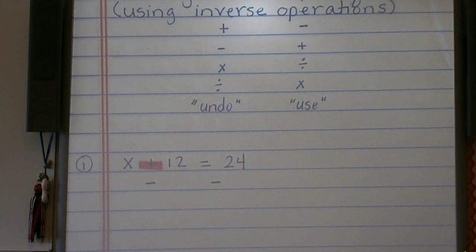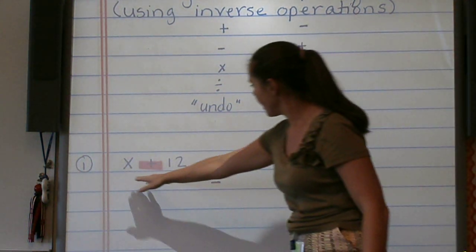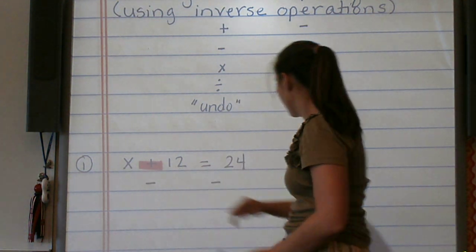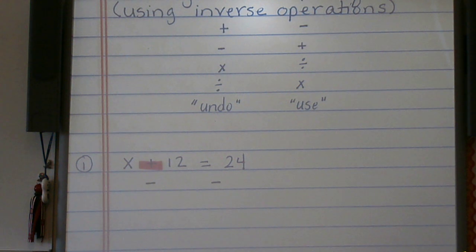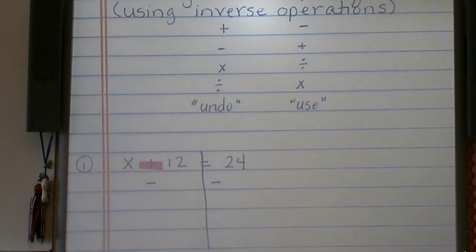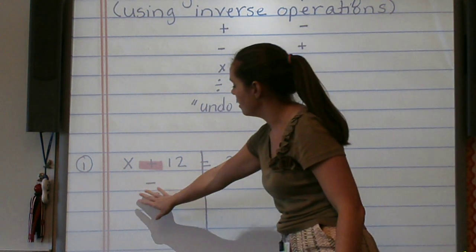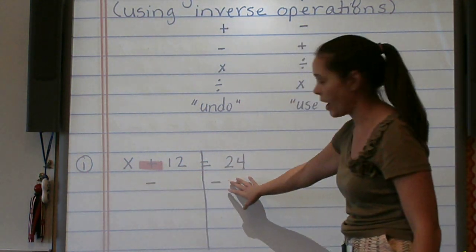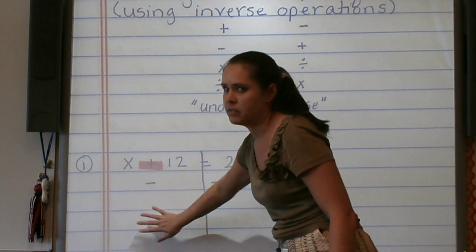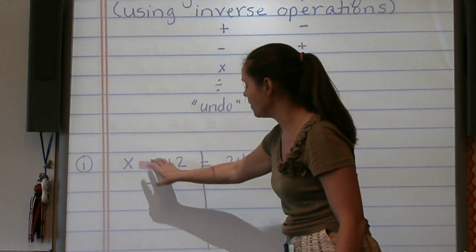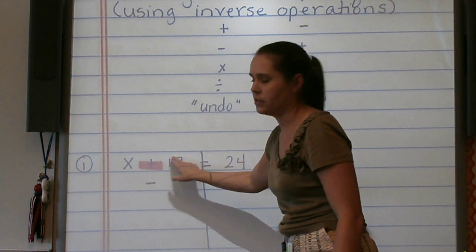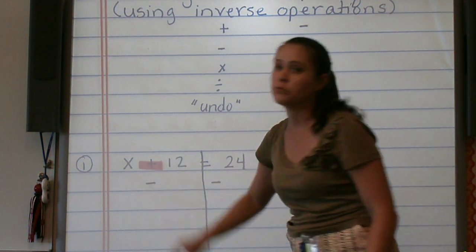So I'm going to use subtraction to isolate my variable. Now what this means is that right now on the left-hand side of our equal sign, we have x plus 12. On the right-hand side of our equal sign, we have 24. I'm going to draw a line down the paper just so that we can easily see the left versus the right. We want only the x to be on the left. And right now the x has a 12 with it. We want to get rid of the 12.